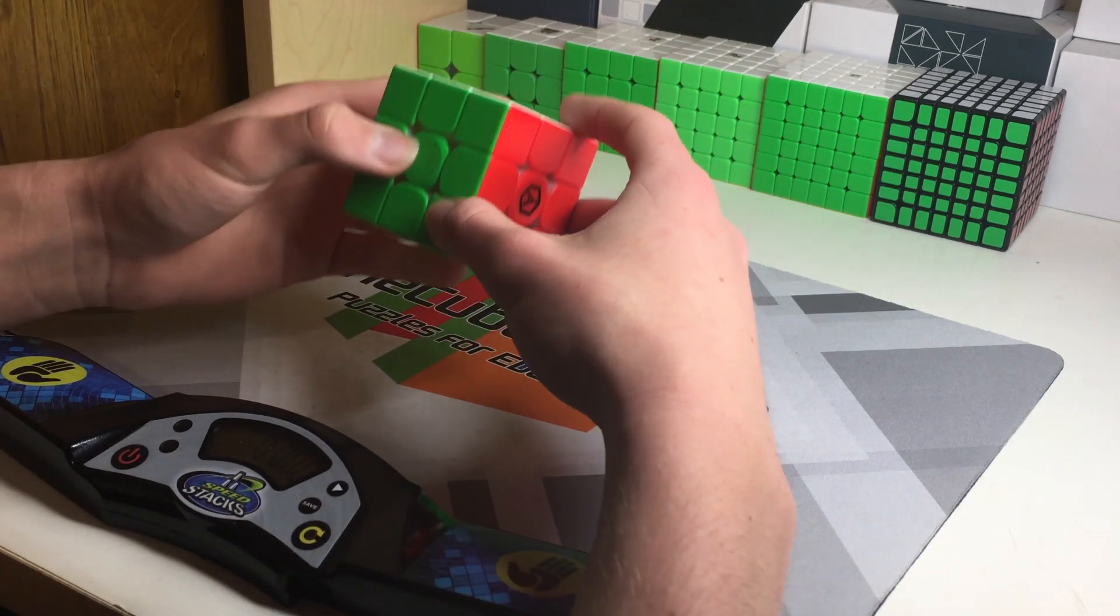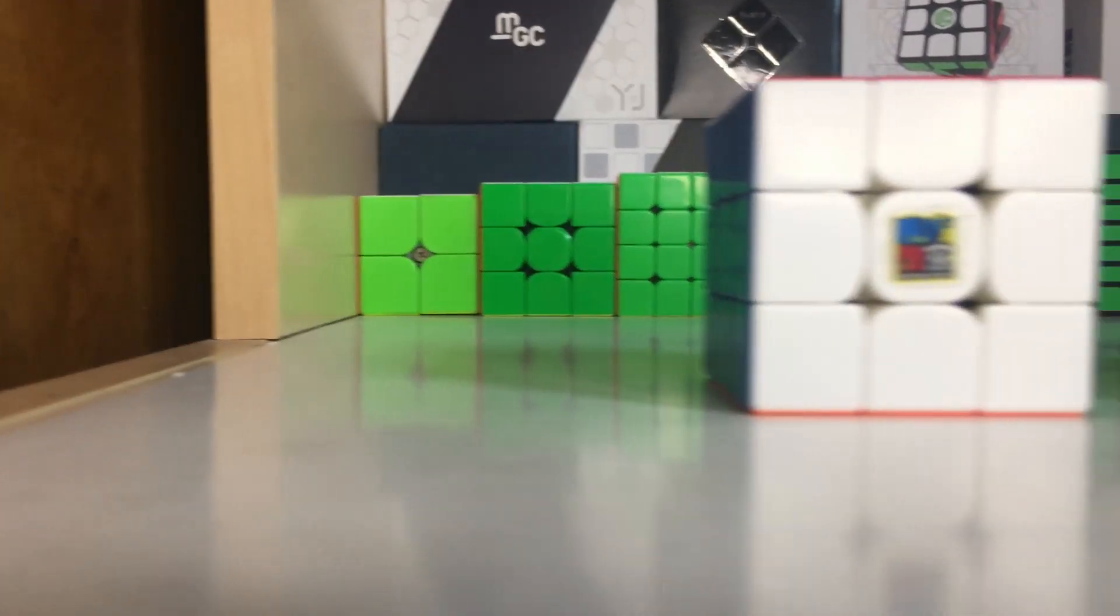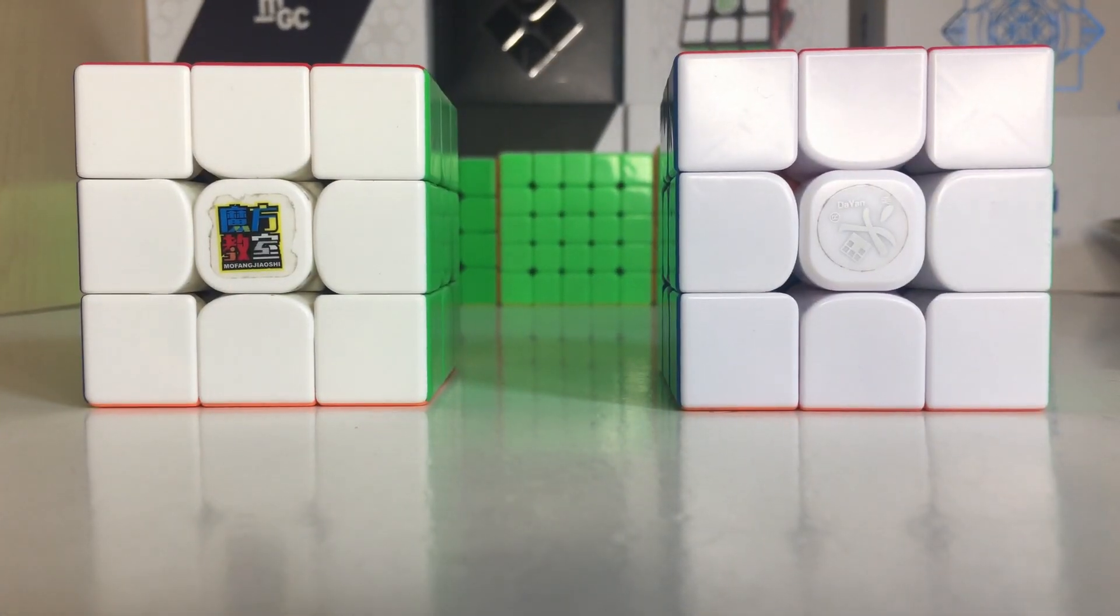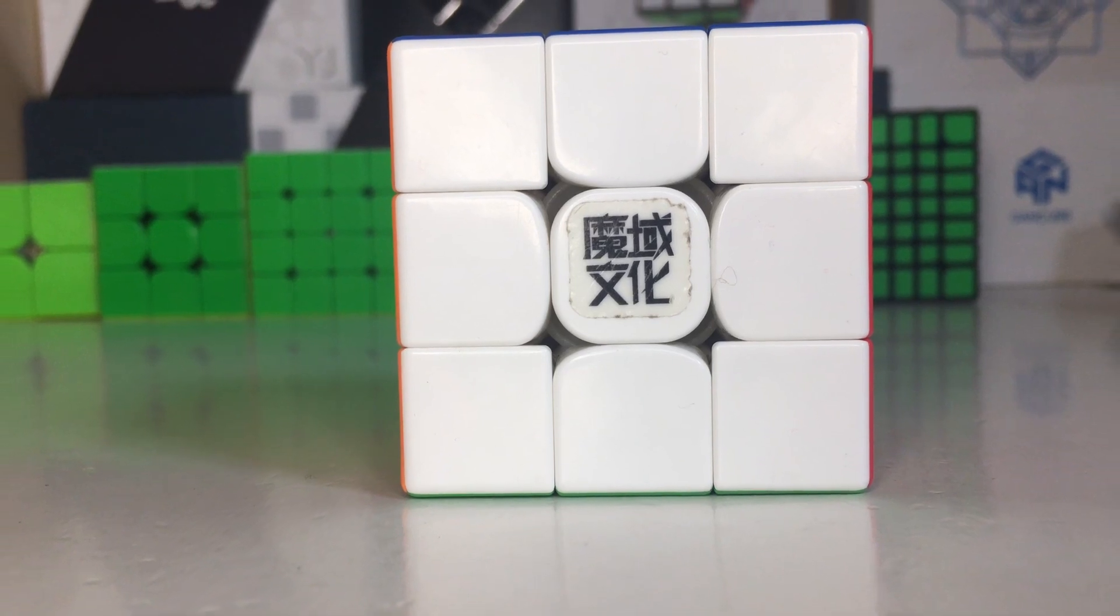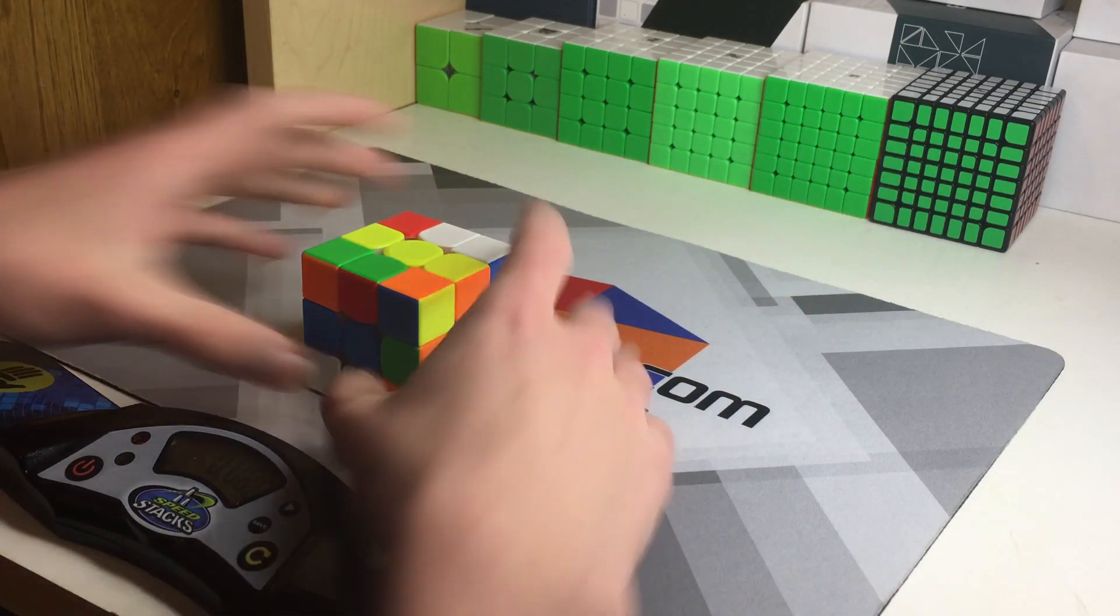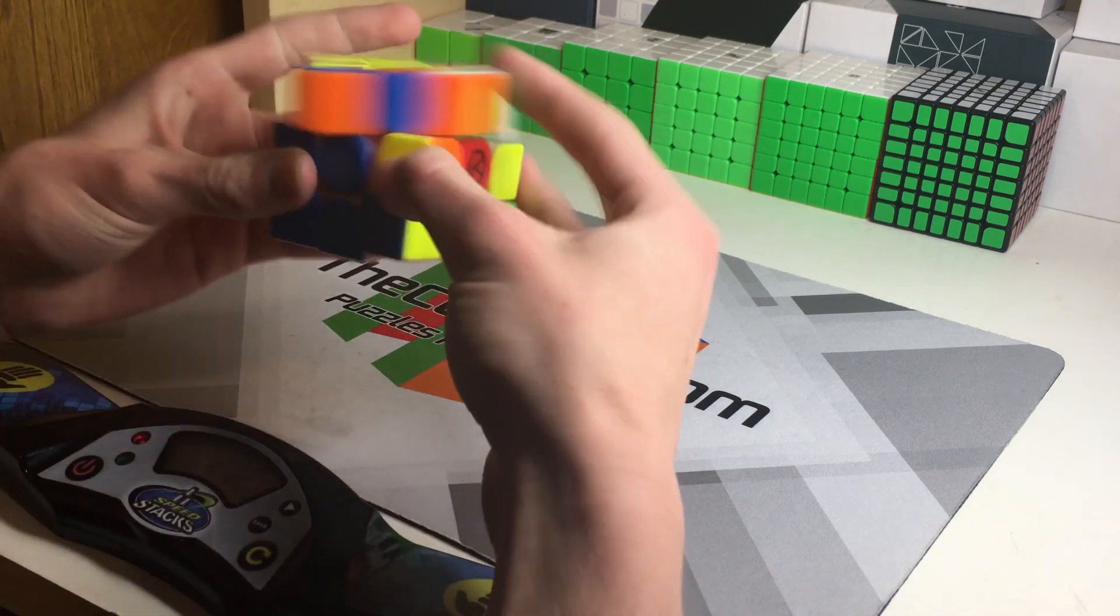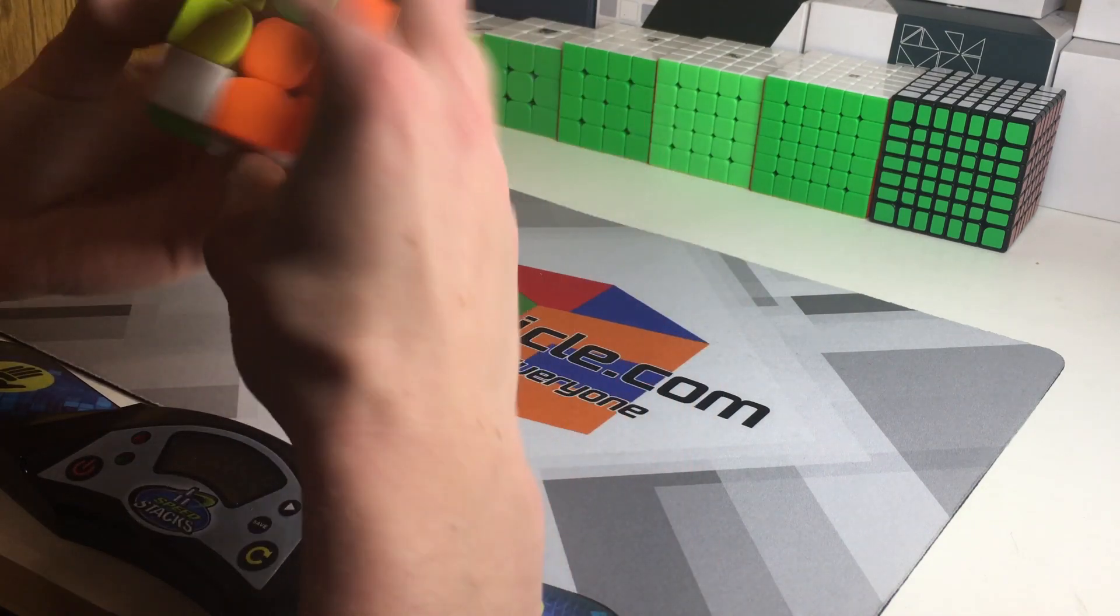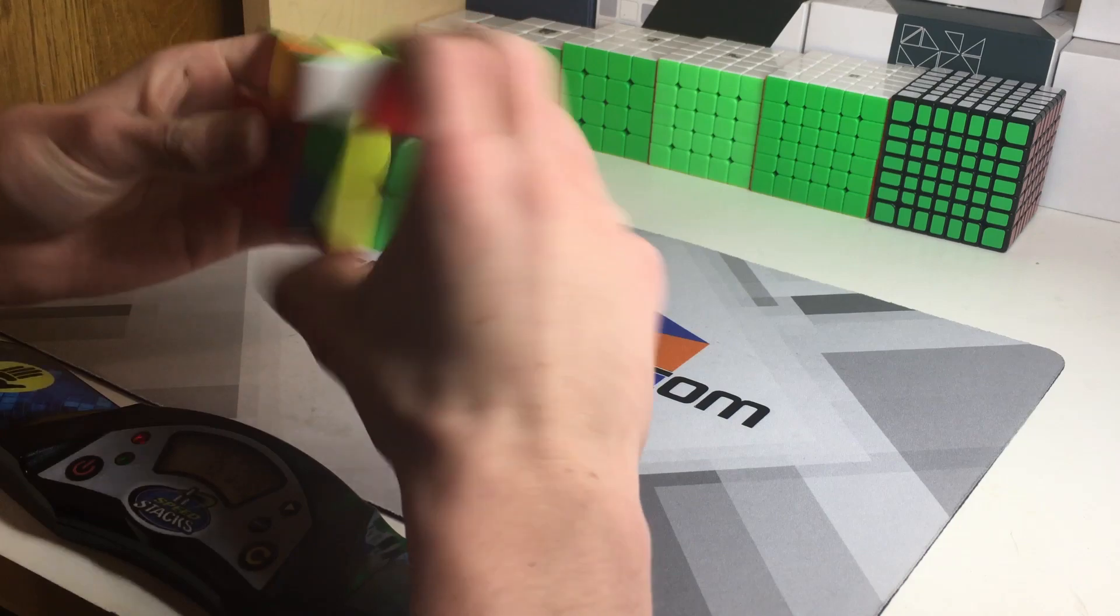However, I do think you could get better value out of some other cheaper 3x3s such as the RS3M 2020 or the Dian Guhong V4, or maybe you want to go for something at a higher price point like the WRM 2020. Those cubes have amazing performance as well and at a much lower price point, and that's what just makes it so hard to recommend the Angstrom GAN 11M Pro.